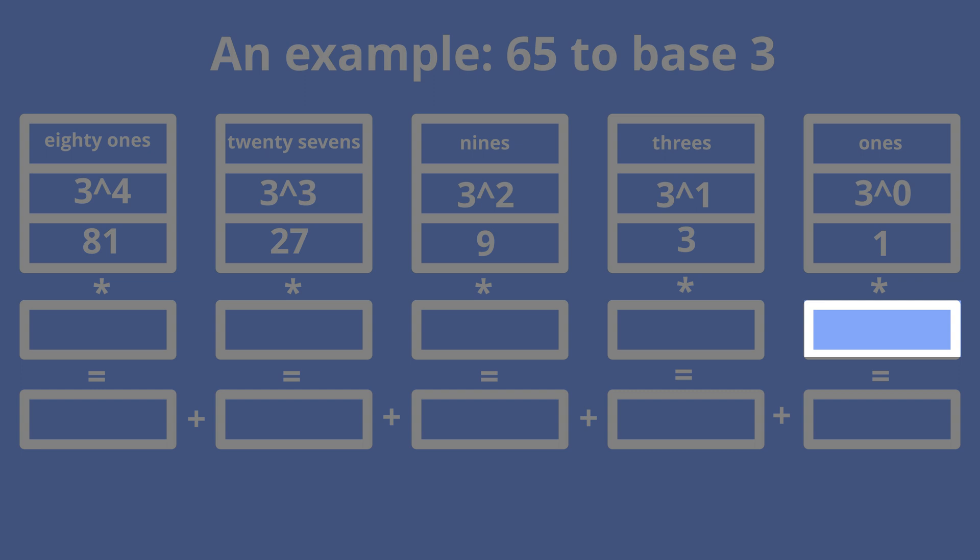We can move from left to right each time trying to fill a position with the maximum digit. Since this is the base 3 number system, the maximum digit is 2. If, in some step, the sum of the product of digits that were already taken and corresponding weights is greater than the target number, we need to decrease the digit by 1.